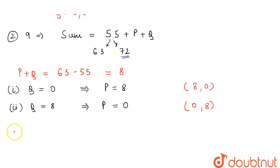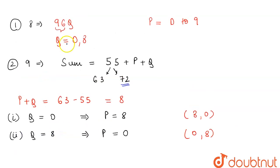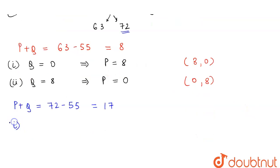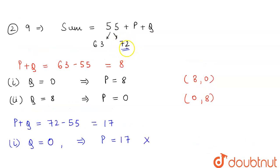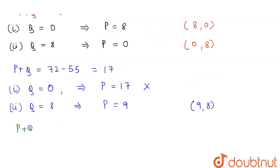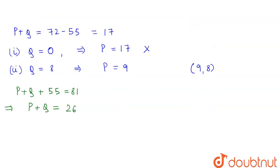For the sum to equal 72, p plus q must equal 17. If q equals 0, then p equals 17, which is not possible since p must be a single digit. If q equals 8, then p equals 9, which is valid, giving the ordered pair (9, 8). Checking the next multiple of 9, which is 81, p plus q would need to equal 26, but no two single digits can sum to 26, so this case is impossible. Therefore we have three ordered pairs: (8, 0), (0, 8), and (9, 8).